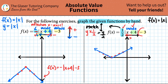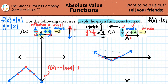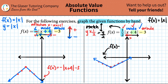That takes care of the one half shift. Now for the minus three: it's outside the function, so it's a vertical shift. Minus means going down, and by three. I take the whole graph and shift it down three: down one, down two, down three. That completes all three shifts. This is the final graph of f(x) = (1/2)|x+4| - 3.